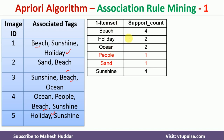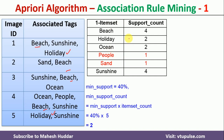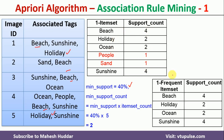Once we write the support count of the 1-itemsets, we need to select the qualified frequent 1-itemsets. The minimum support given is 40%, so the minimum support count is 40% multiplied by 5 instances, which equals 2. So the minimum support count is 2. Itemsets with a support count of 2 or more qualify as frequent. Beach, holiday, ocean, and sunshine are the 1-frequent itemsets.